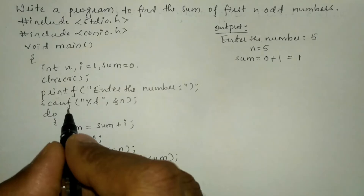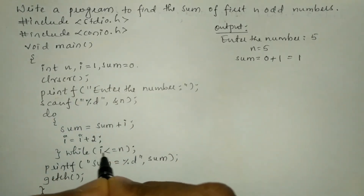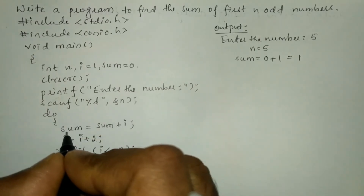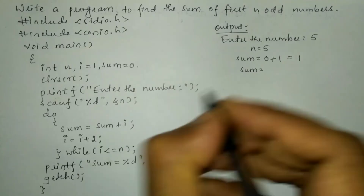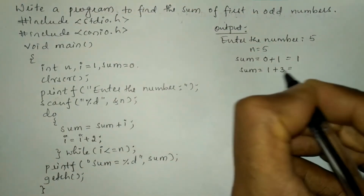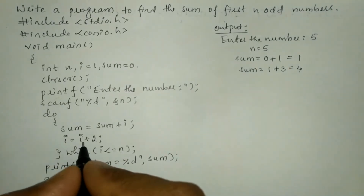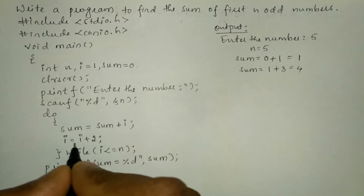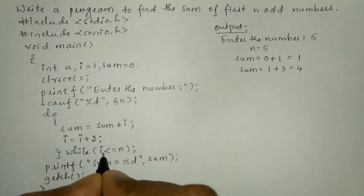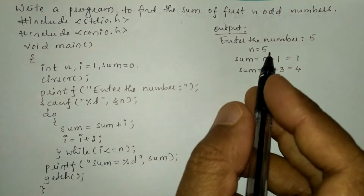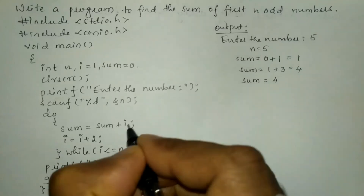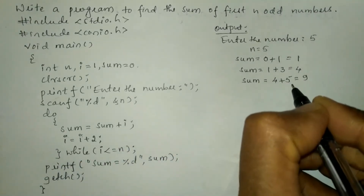Is three less than or equal to five? Yes, condition is true, so control transfers back to do. Sum is equal to sum plus i: sum was one, i is three, so one plus three is four — four is stored in sum. Next, i is incremented by two: three plus two is five. Is five less than or equal to five? Yes, condition is true. Again control transfers to do: sum is equal to four plus five, which equals nine. Nine is stored in sum.